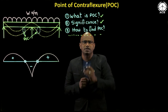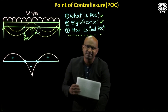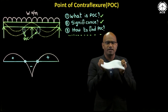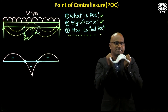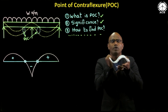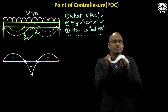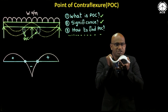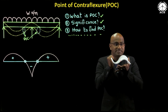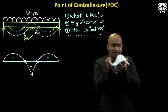Let's start with the first question: what is meant by point of contraflexure? Assume I have a beam. Because of different types of loading, the beam is bending. One part of the beam is under sagging and another part is under hogging. The point of contraflexure is the point at which the curvature of the beam changes from sagging to hogging, or hogging to sagging.